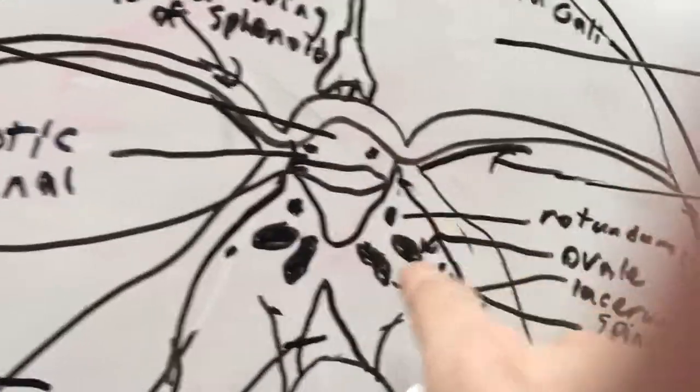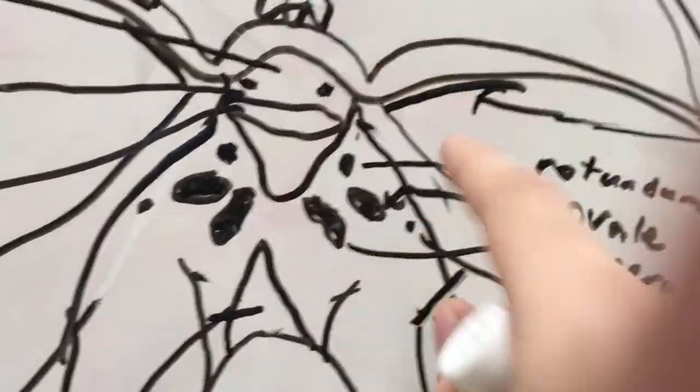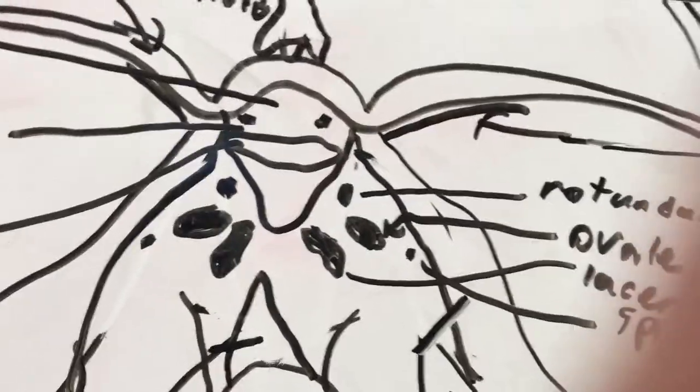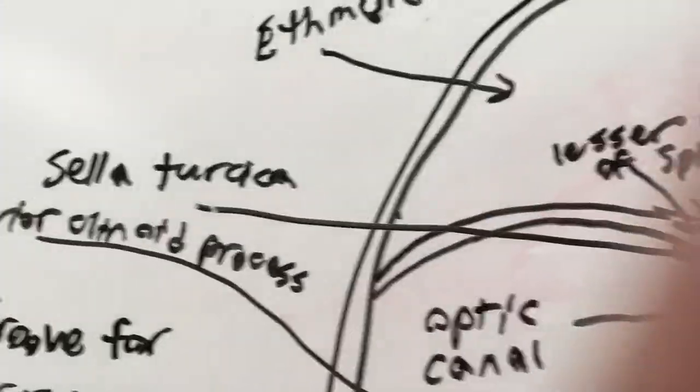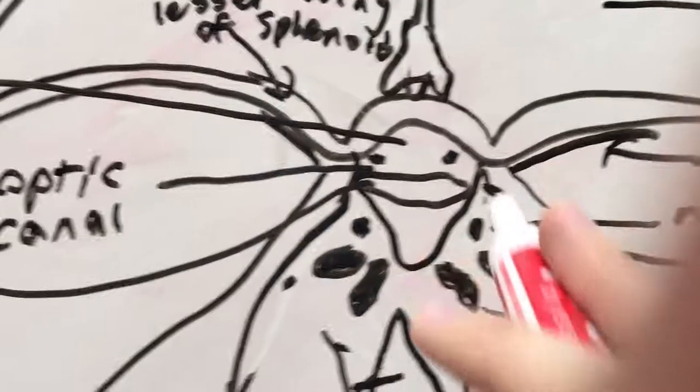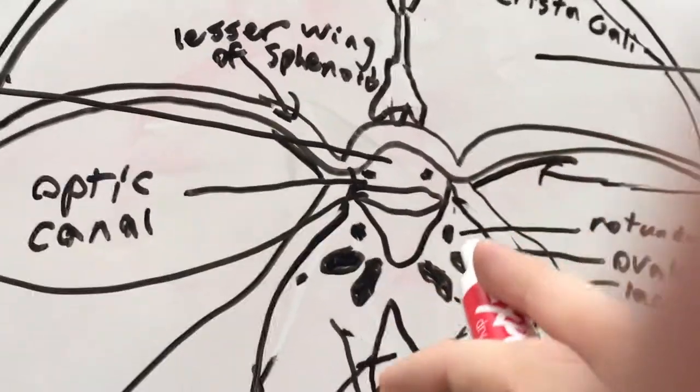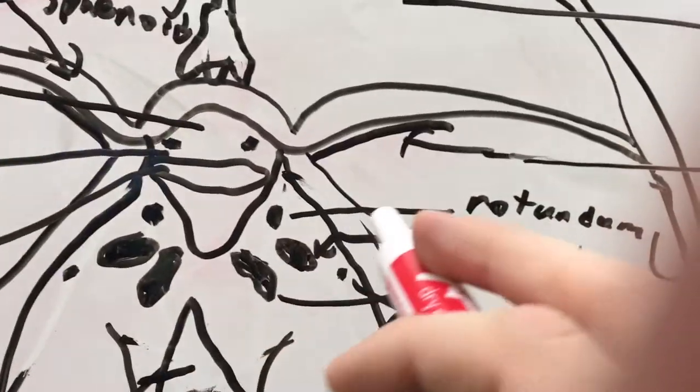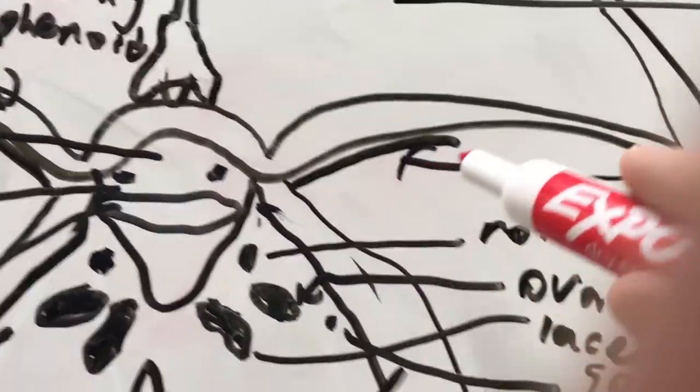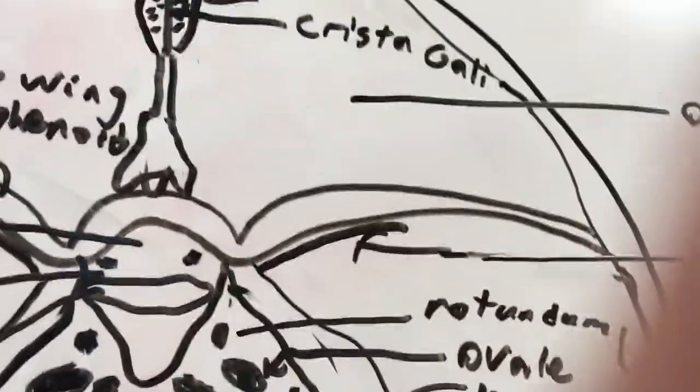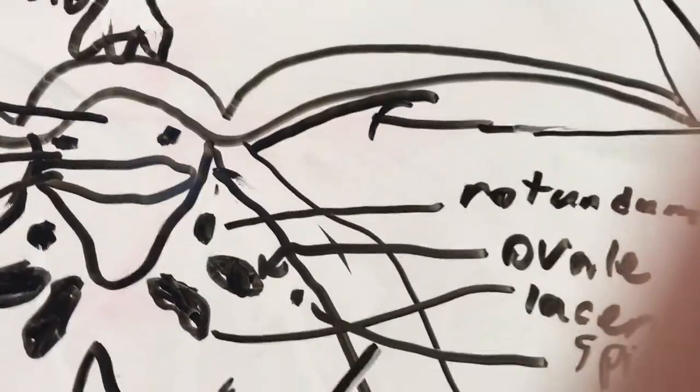Now here we, again, optic canal. That's where your optic nerves goes through. It's on the sella turcica. It also has the posterior clinoid process. And here we have the superior orbital fissure where several other cranial nerves, cranial nerves 3 and 4, they go through that.